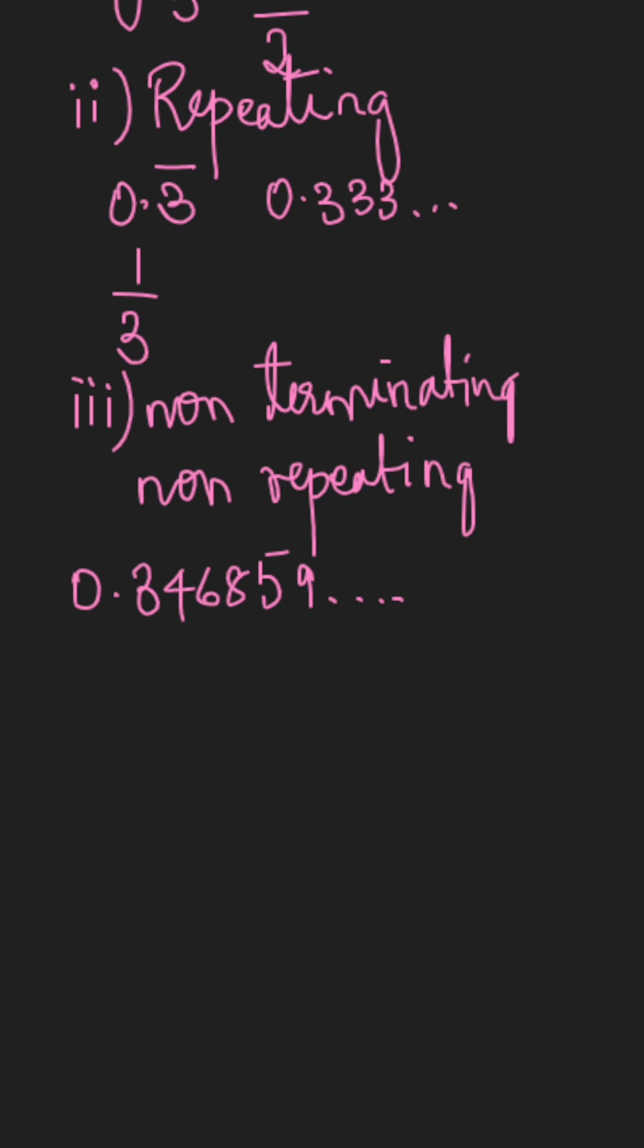These type of decimals are not rational. They are called irrational numbers.